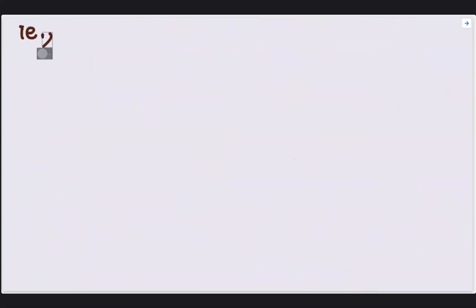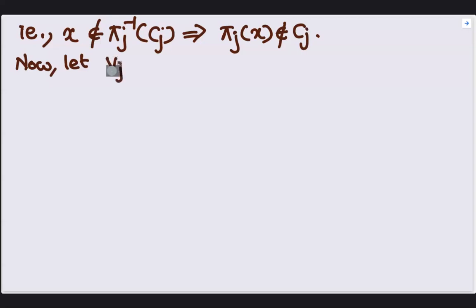Therefore, we have pi_J of x does not belong to C_J. Now, let V_J be the complement of this C_J.